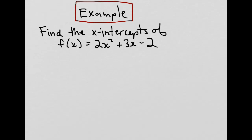Recall from earlier that the value of f is always equal to 0 for any intercept. So, we can substitute into the equation here and say 0 must equal 2x² + 3x - 2.